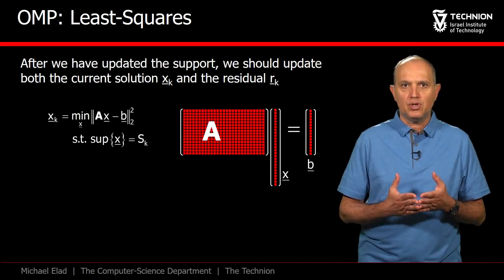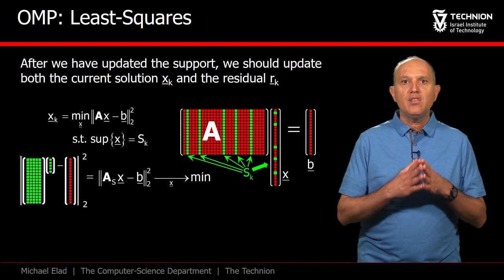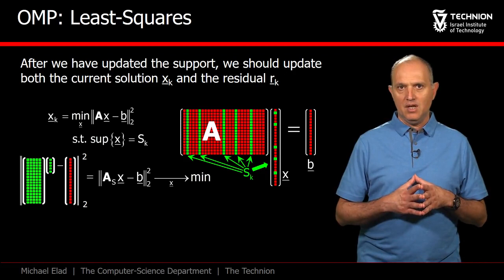Focusing on the step of updating xk, this is a least squares computation over the portion of the whole vector x. Given the support Sk, we are to extract only the green columns and solve for the green entries in the vector x.